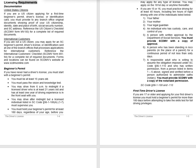Licensing Requirements — Documentation. United States Citizens: If you are a U.S. citizen applying for a first-time beginner's permit, driver's license, or identification card, you must provide to any branch office original documents showing proof of your U.S. citizenship, identity, date and place of birth, social security number, and SC address. Reference the U.S. citizen's checklist, SCDMV Form MV-93, for a complete list of required documents. International Customers: If you are not a U.S. citizen, you may apply for an SC beginner's permit, driver's license, or identification card at one of the branch offices that processes applications for international customers. Reference the International Customers Checklist, SCDMV Form MV-94, for a complete list of required documents. Forms and locations can be found on SCDMV's website at www.scdmvonline.com.